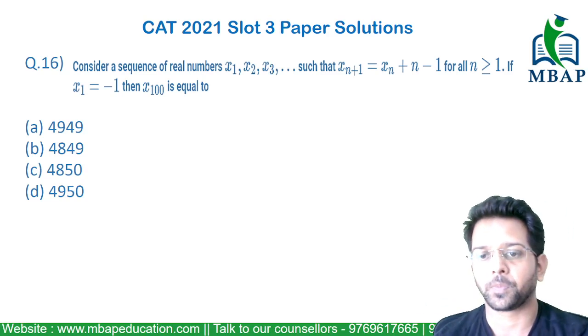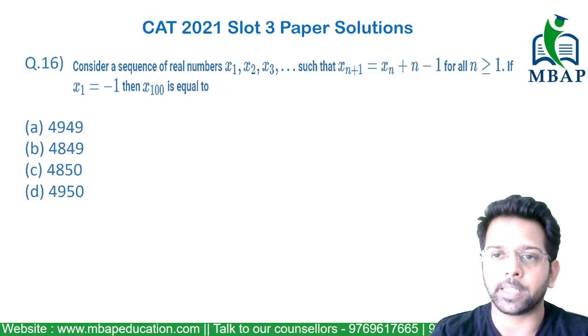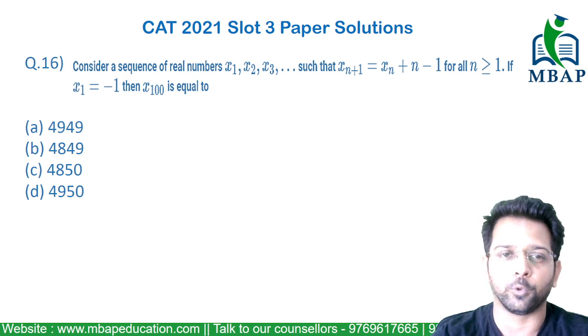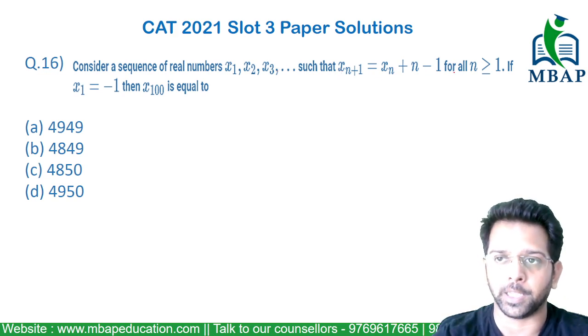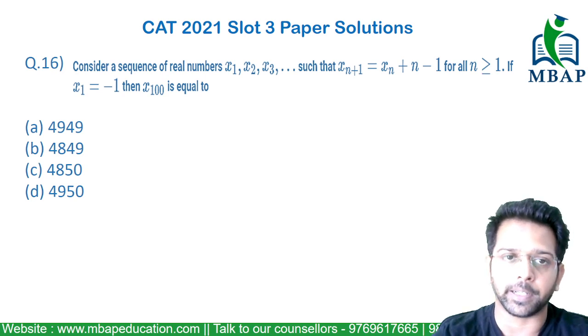Have a look at the next question. It's a sequence and series-based chapter, so you'll find some logic here. Consider the sequence of real numbers x1, x2, x3 such that x(n+1) equals xn plus n minus 1, where n is greater than or equal to 1. x1 has been given as minus 1. x100 has been asked.